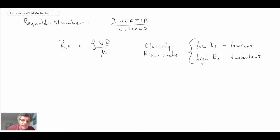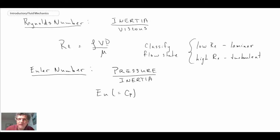Another one is the Euler number, although quite often it's referred to as being the pressure coefficient. This is the ratio of pressure forces to inertia. Euler number, although I never use that and it's very rare that I see it, it's often represented as being the pressure coefficient, Cₚ.